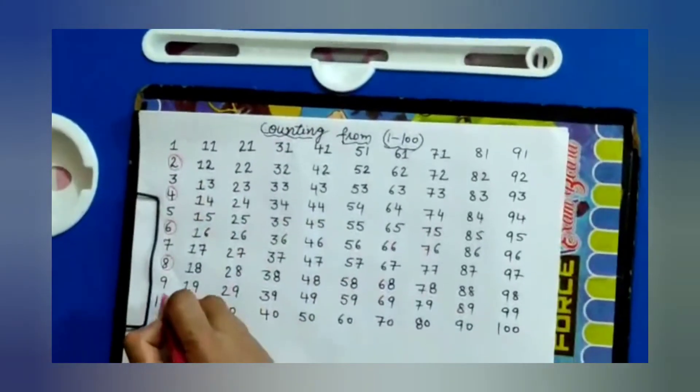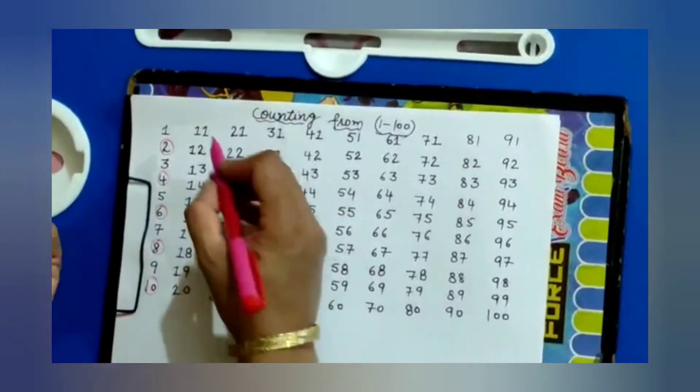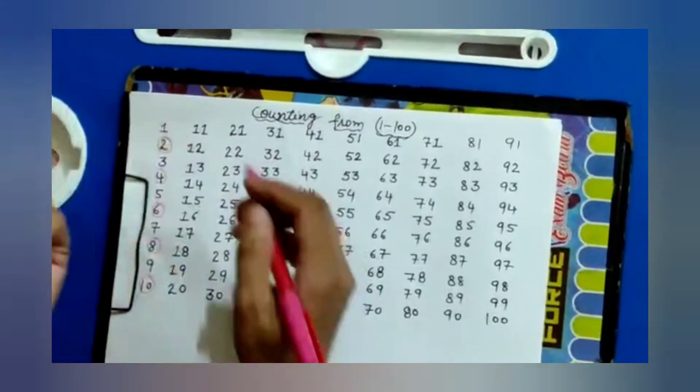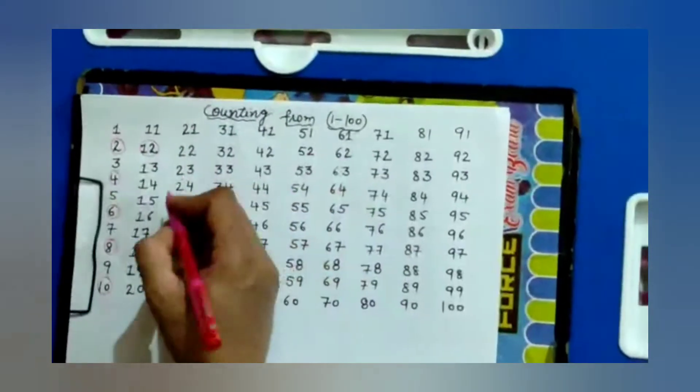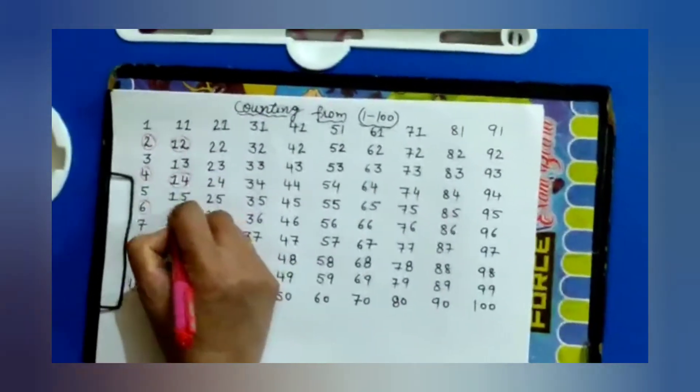Nine, ten—circle the number ten. Eleven, twelve—circle the number twelve. So like this, we will circle all the numbers.